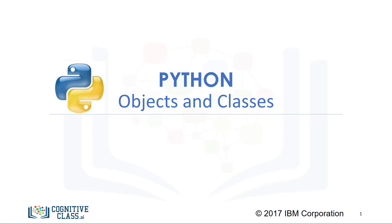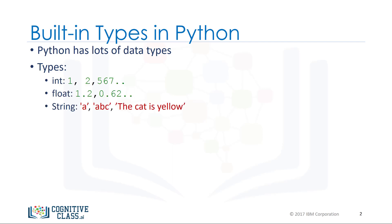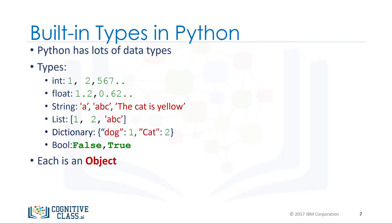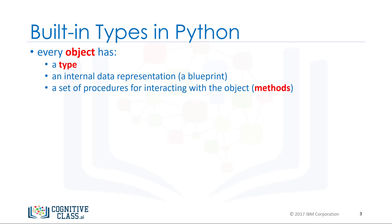In this module we are going to talk about objects and classes. Python has many different kinds of data types: integers, floats, strings, lists, dictionaries, and booleans. In Python each is an object. Every object has the following: a type, an internal representation, and a set of functions called methods to interact with the data. An object is an instance of a particular type.